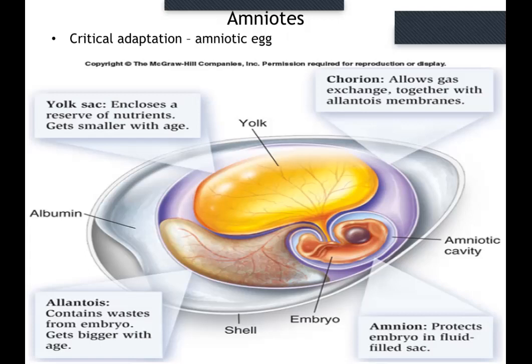The allantois stores waste products — anything that doesn't get properly digested or fecal matter — and it gets as large as the embryo while the yolk gets smaller as the embryo begins to fill up the egg.